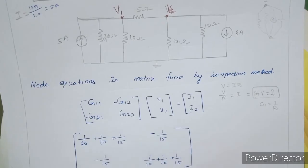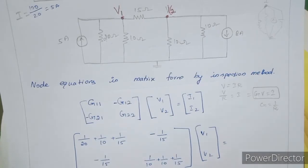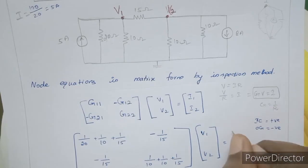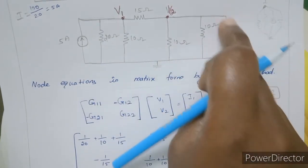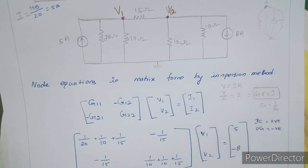Now we fill in the current vector. The incoming current is positive and outgoing current is negative. The incoming current at node 1 is 5A, so I1 is positive 5. For node 2, the 8A source arrow is in the downward outgoing direction, so I2 is minus 8.